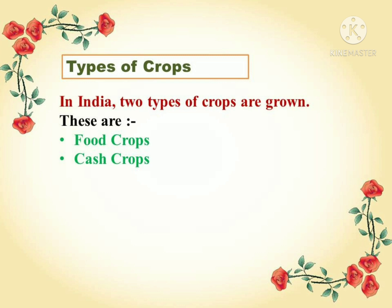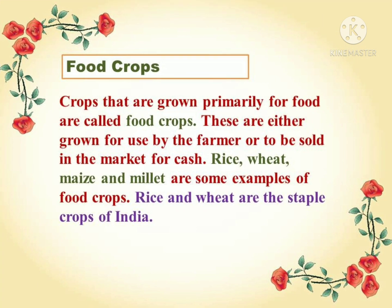In India, there are two types of crops: food crops and cash crops. Food crops are the crops that are grown primarily for food. They are either grown for use by the farmer or to be sold in the market for cash. Some examples of food crops are rice, wheat, maize, and millet.